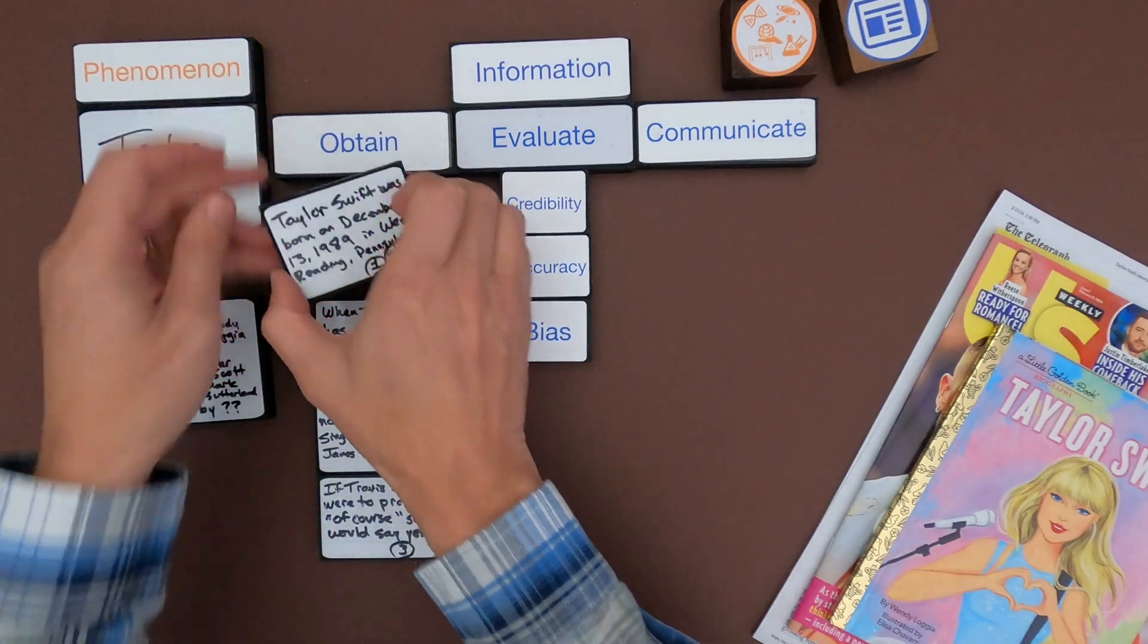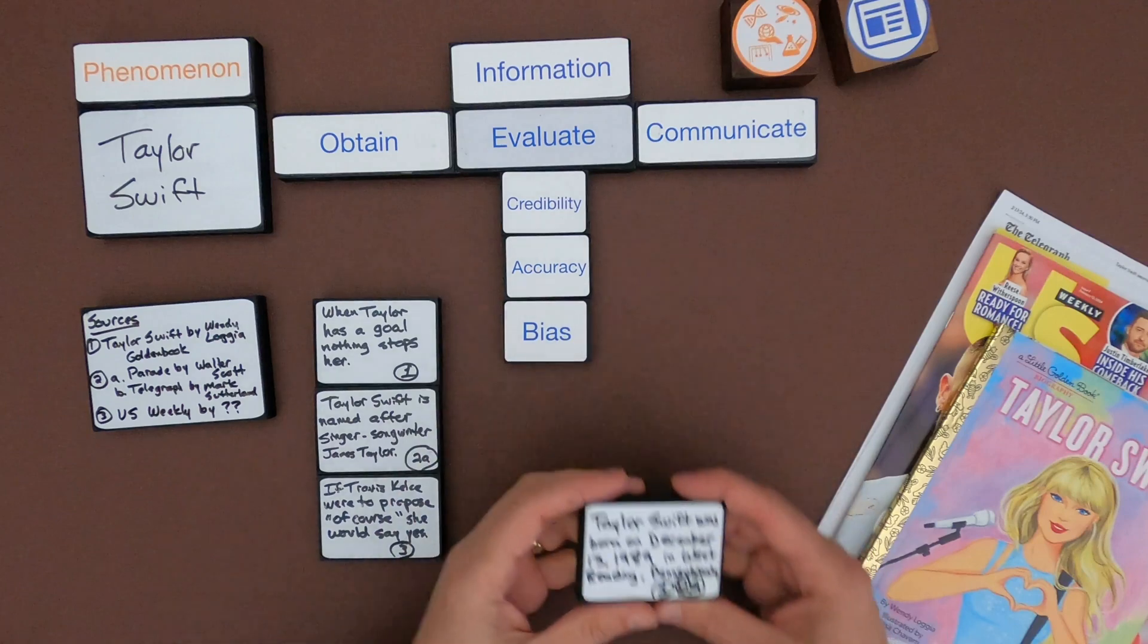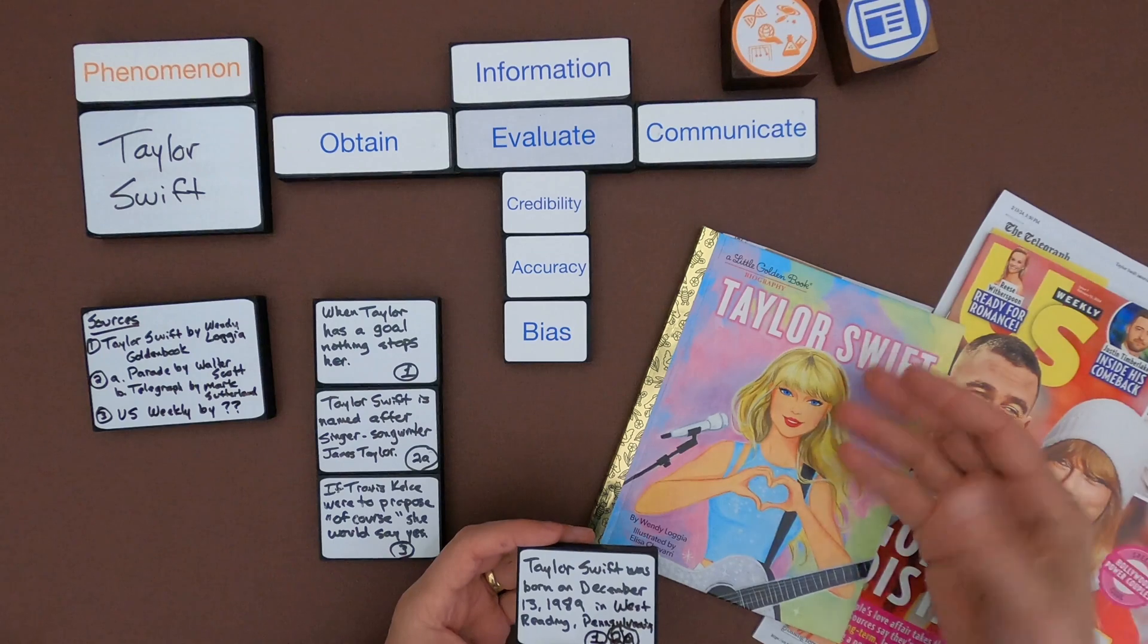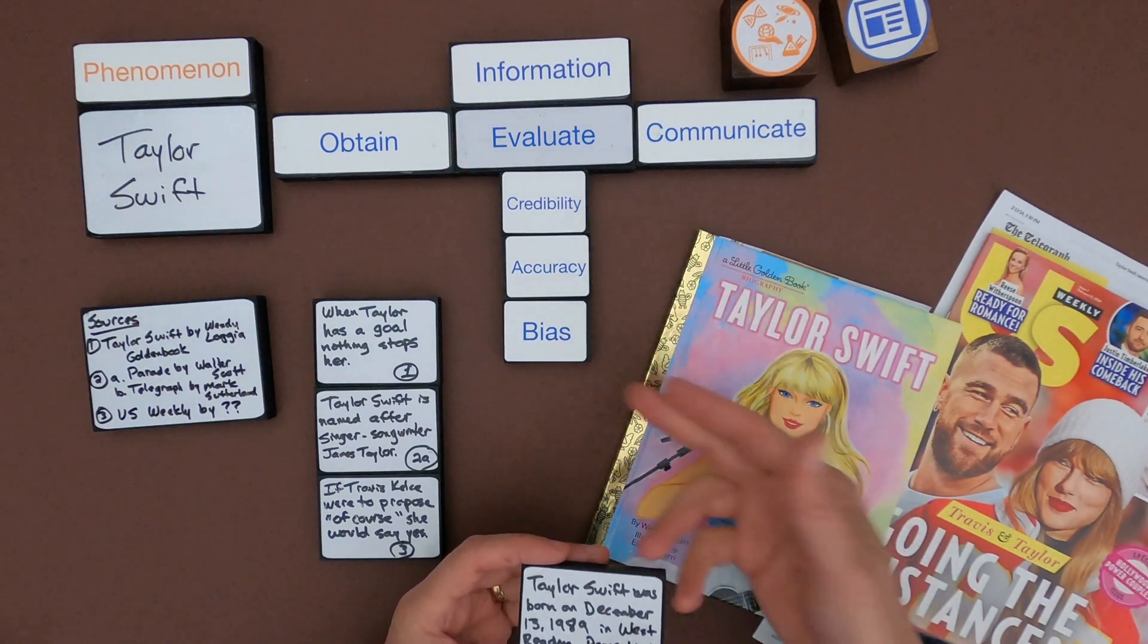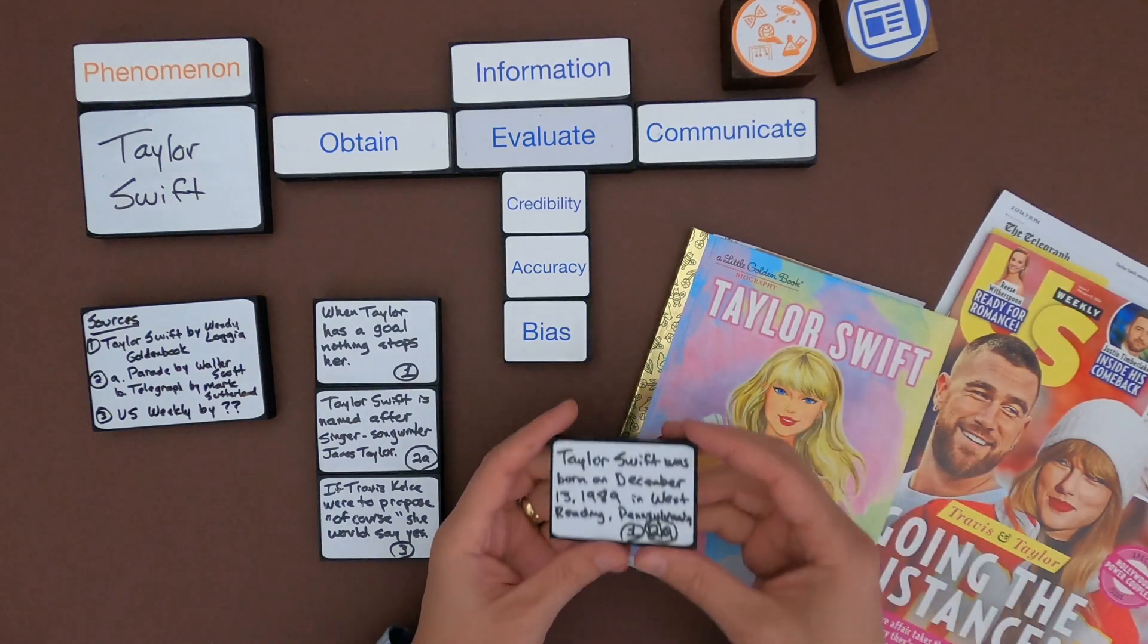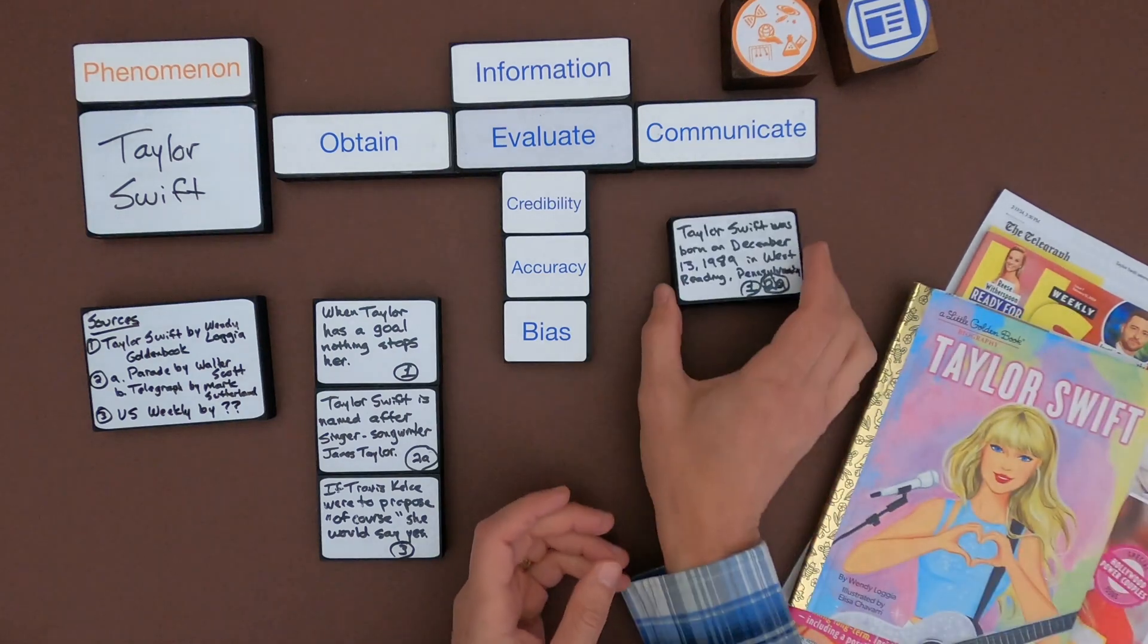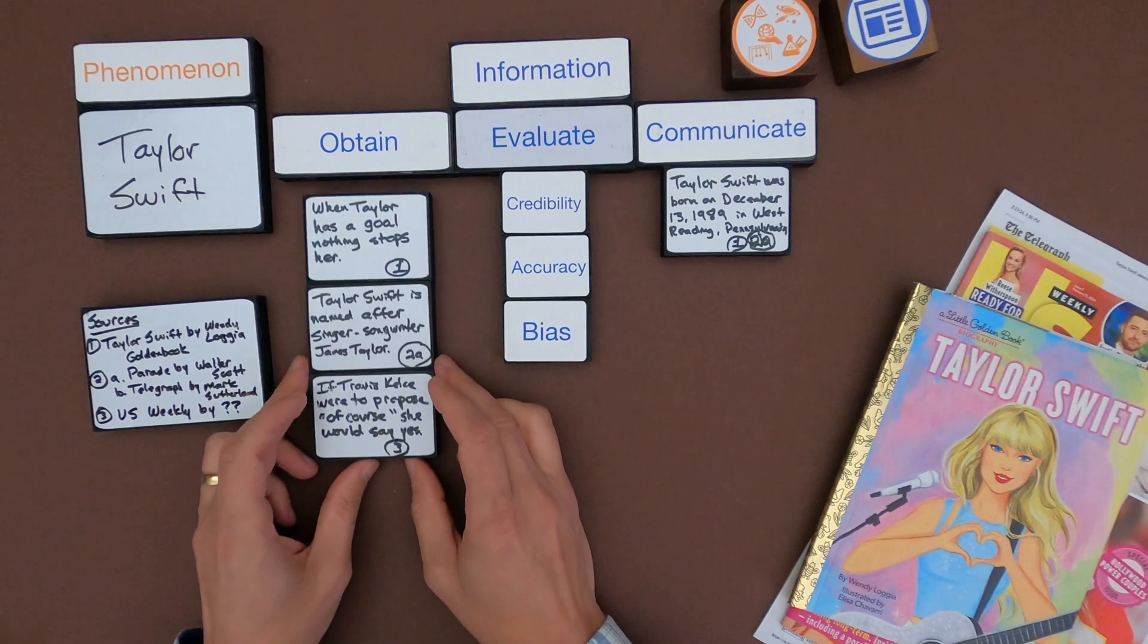So if we start with the first one, let's look at this. Taylor Swift, she was born at this date. Is it credible? Well, it's coming from this. So it's a published book. We have an author who is really an editor. And so that would lend to their credibility and accuracy. I mean, there is a slight bias because they're writing a book on Taylor Swift. But I don't know why changing the date or where they're born would help them sell this book in any way. So I would be willing to move this over to communicate information.